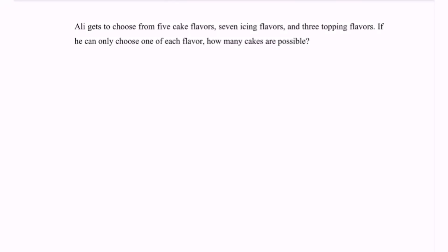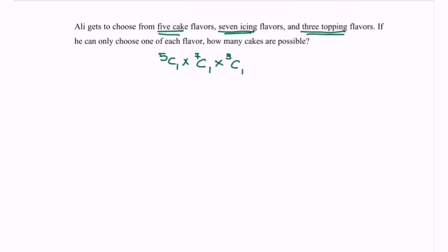Next, we have an example for permutation and combination. Ali gets to choose from five cake flavors, seven icing flavors, and three topping flavors. If he can only choose one of each, how many cakes are possible? Using combination: 5C1 × 7C1 × 3C1 = 105 possible cakes.